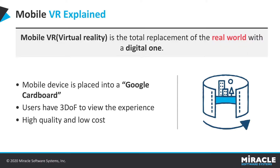So what is mobile virtual reality? It's the total replacement of the real world with a digital one. A mobile device is placed into a viewer, and then you place the viewer on your head, and you can view the experience.